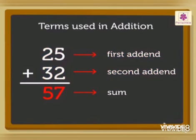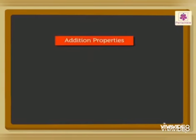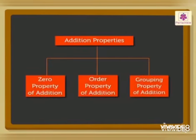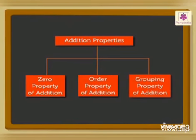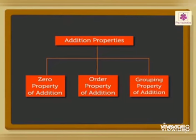Addition properties. There are three types of addition properties. First, zero property of addition. Second, order property of addition. Third, grouping property of addition.